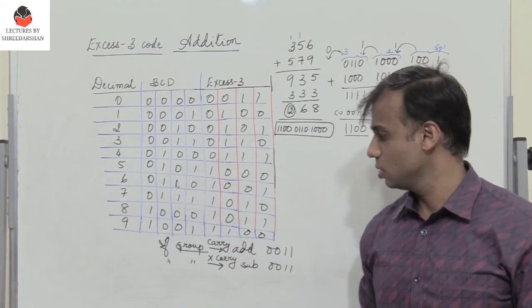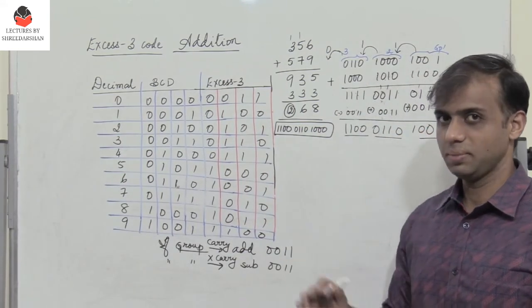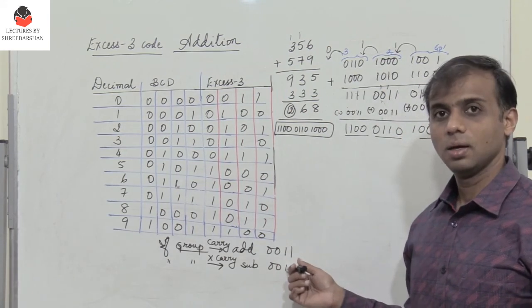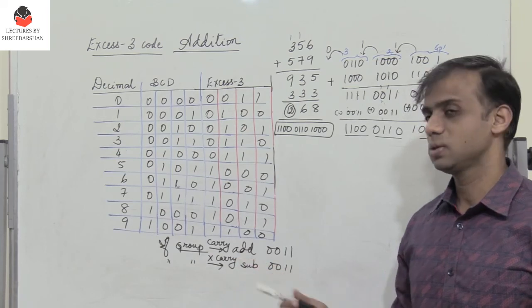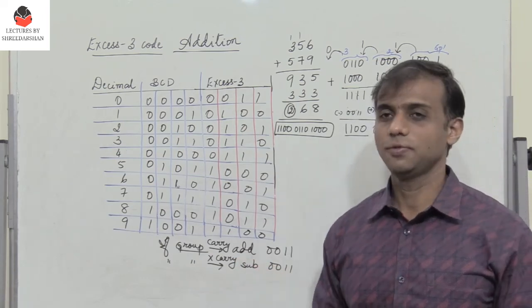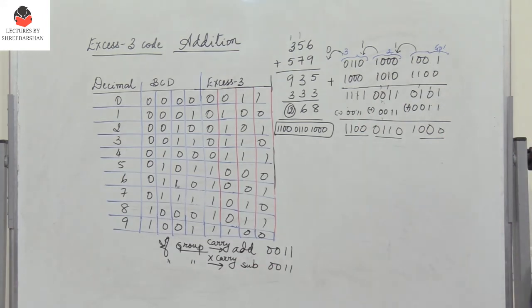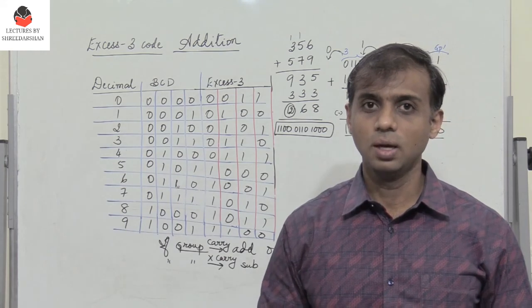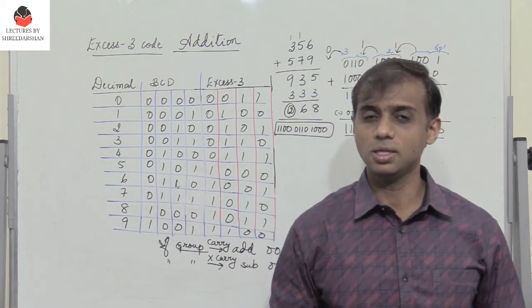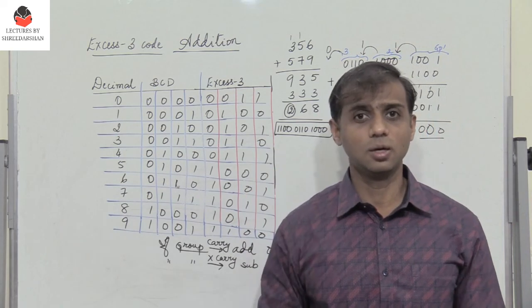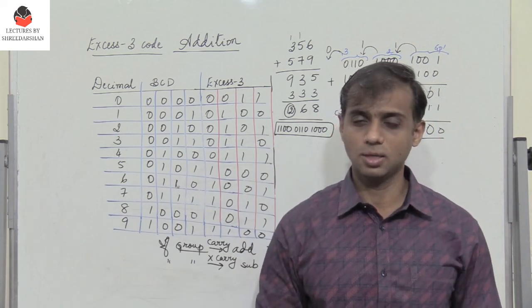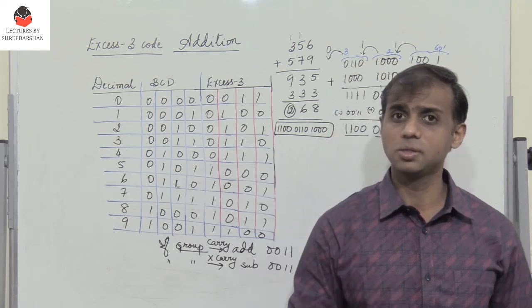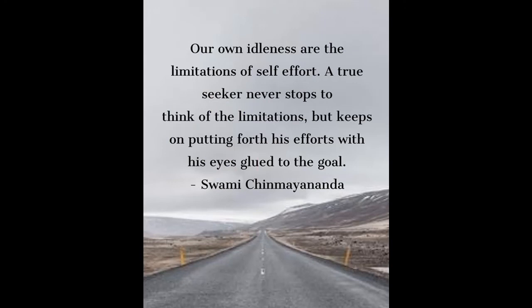Very simple — we just need to remember these two rules: if the group generates a carry to the next stage, you add 3; if it does not generate a carry, you subtract 3, and we get the XS3 result. In the next video segment, we shall see how we can perform XS3 subtraction. To view all the videos in digital electronics, click on the eye icon or check the playlist Digital Electronics. Do not forget to like, share, and subscribe, and press the bell icon for notifications.